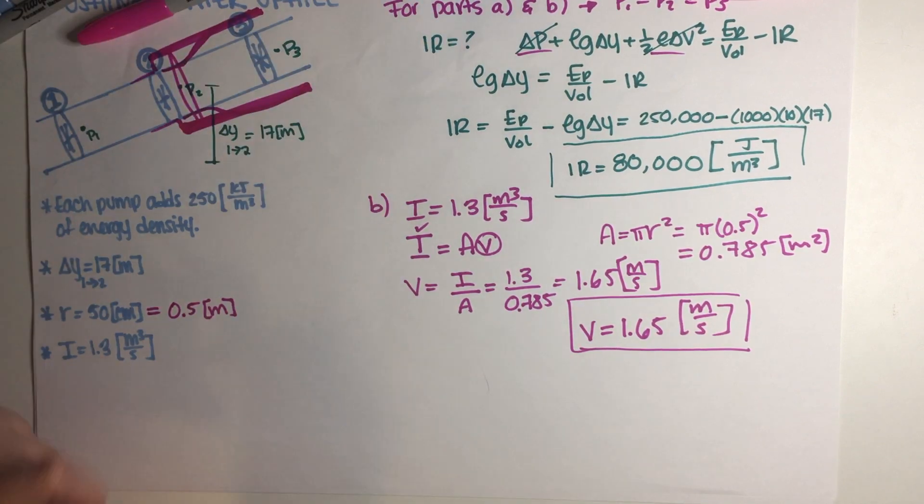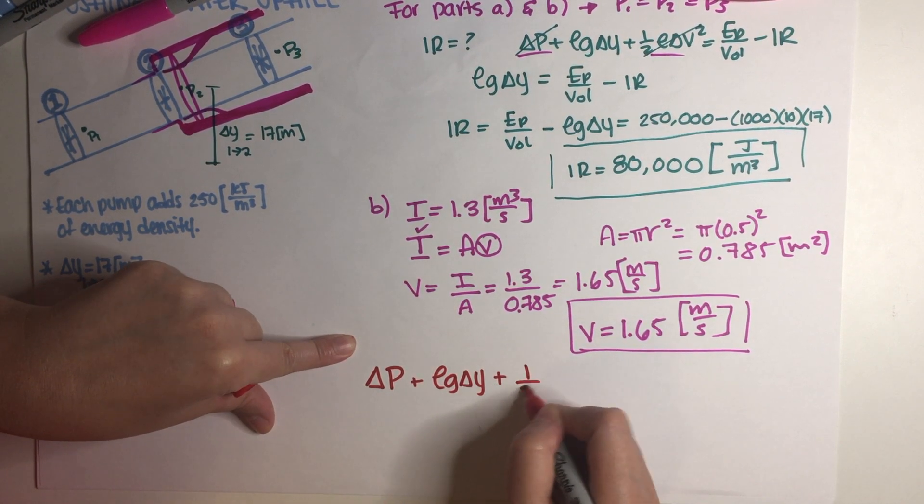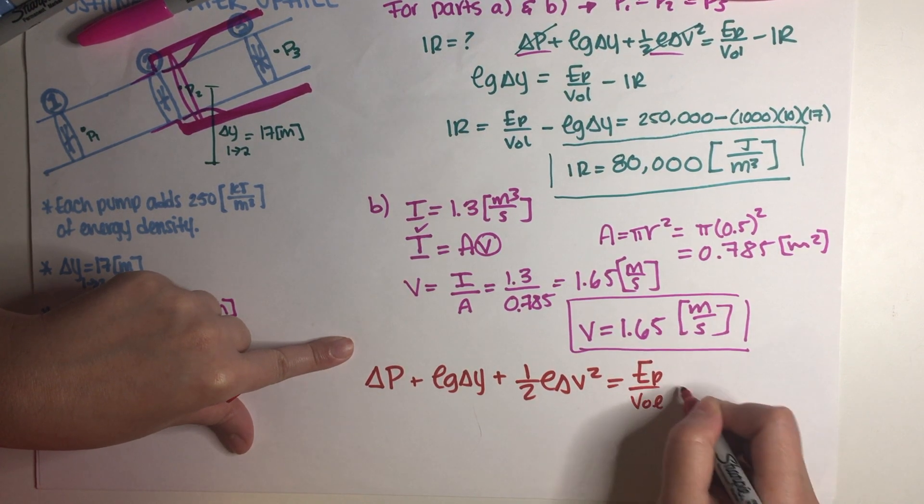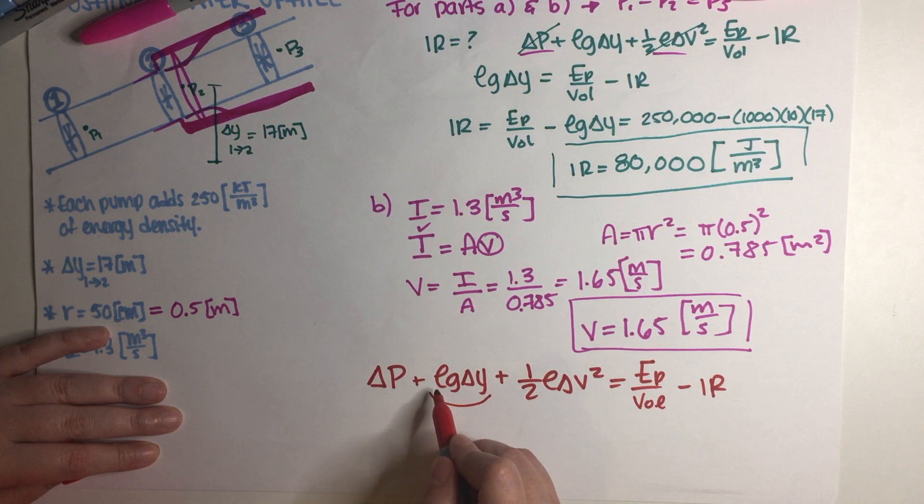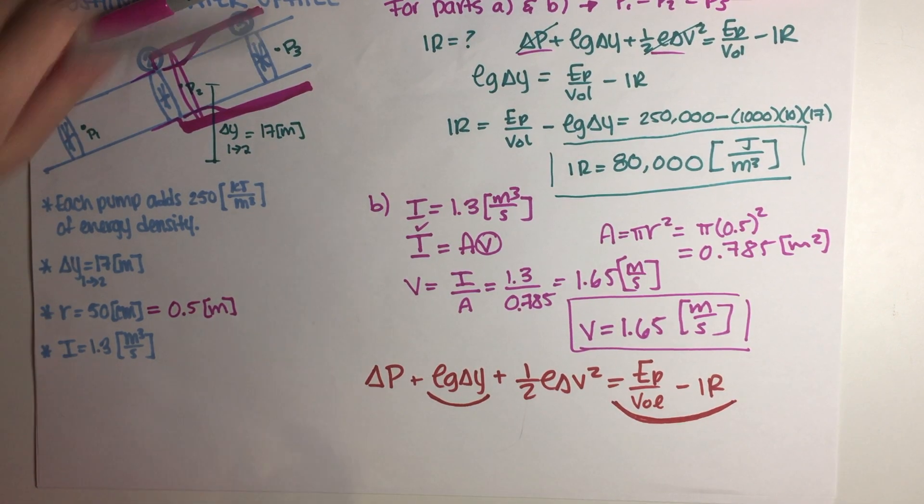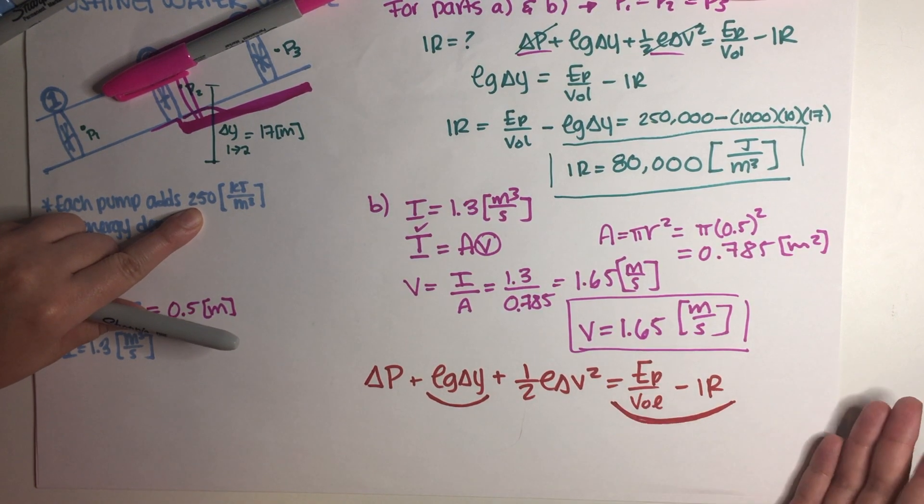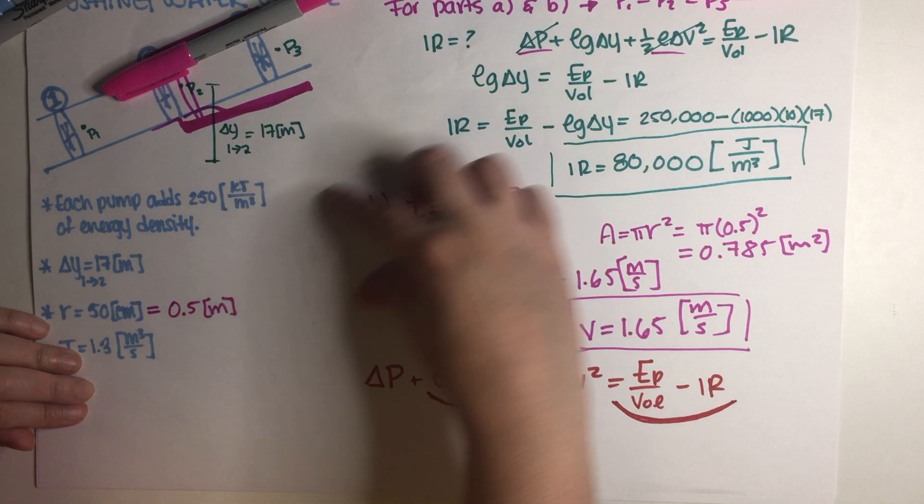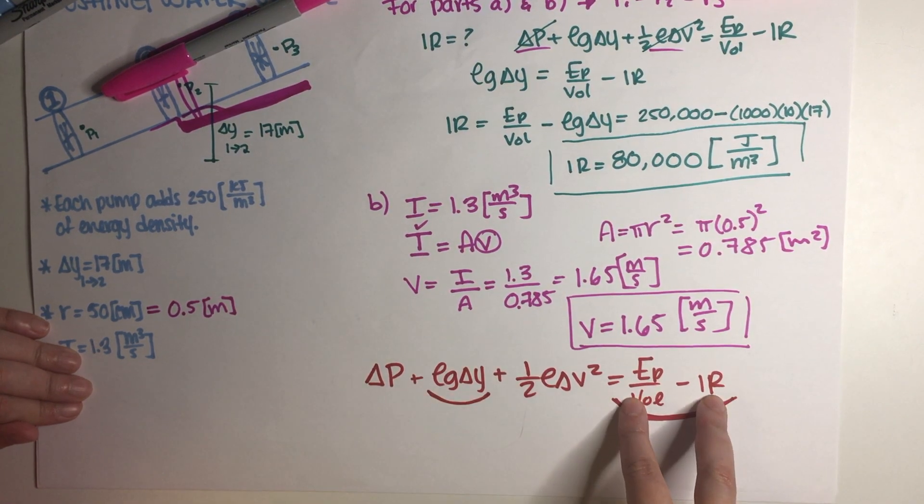So let's just copy our Bernoulli equation. So the new Bernoulli equation would basically be delta P plus rho G delta Y plus one half rho delta V squared and this would have to be equal to E pump over volume minus IR, like this. So let's say this term over here is already equal to these terms over here. How do I know? Well, I didn't change the pump at all, so this is still 250 kJ, this number didn't change. The current also didn't change because I didn't really change this area or this velocity at all, so I'm still gonna have the same flow rate. I'm still gonna have this term. It's gonna be exactly the same. So this is still gonna be equal to this too.